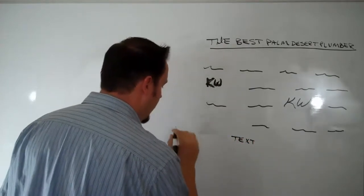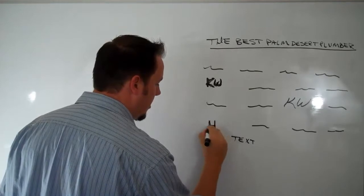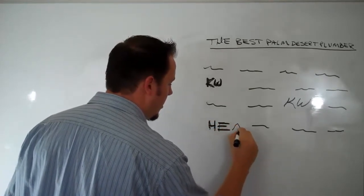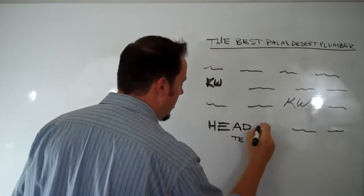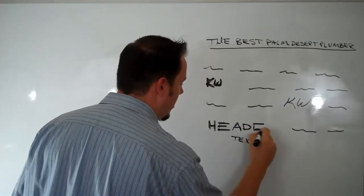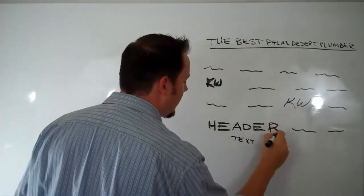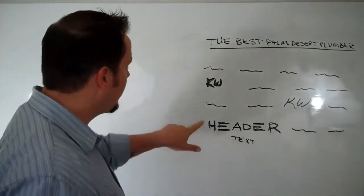So like text will be like this, but header text will be real big and bold, okay? Alright, so anytime you see large text at the top of a page or near the top of the page, there's usually a title there or whatnot, that's the header text.